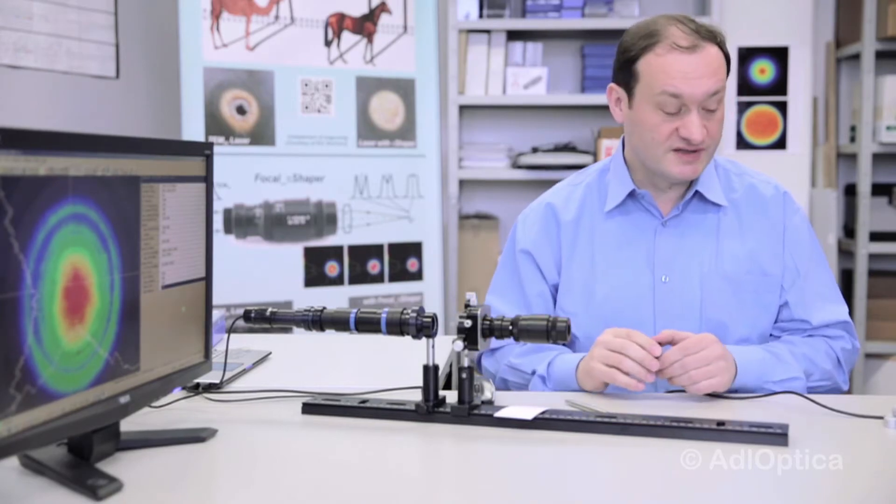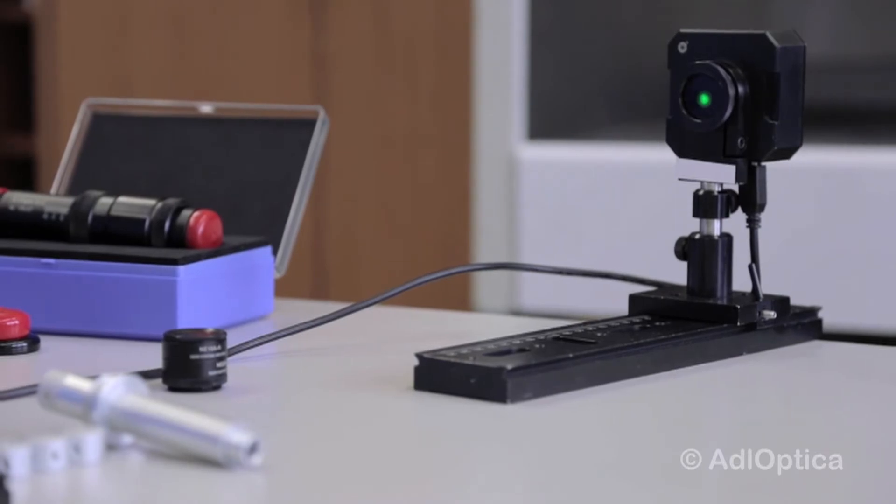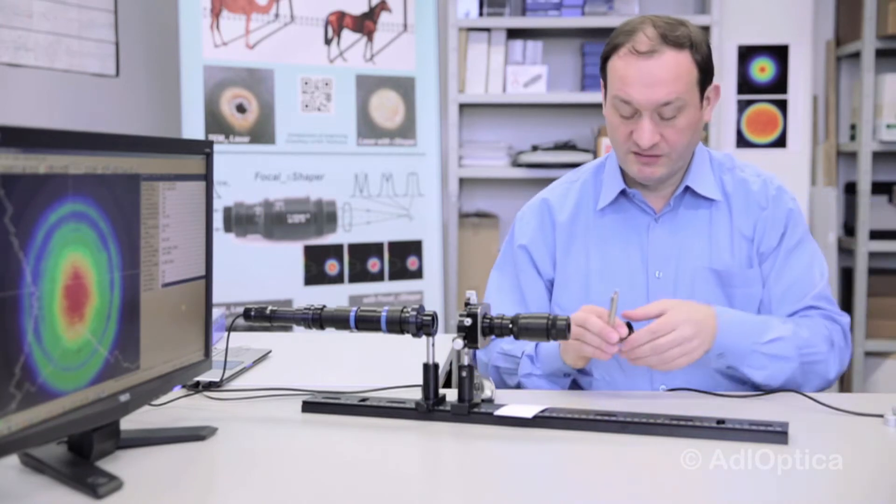And it is possible to use the same camera like this, camera-based beam profiler, to check the profiles before the beam shaper, after the beam shaper, and in the focal plane of this lens.